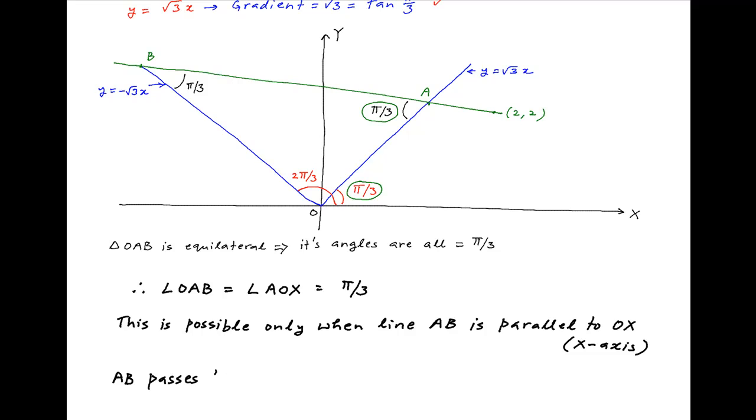Therefore AB is a line that passes through the point (2,2) and is parallel to the x-axis.